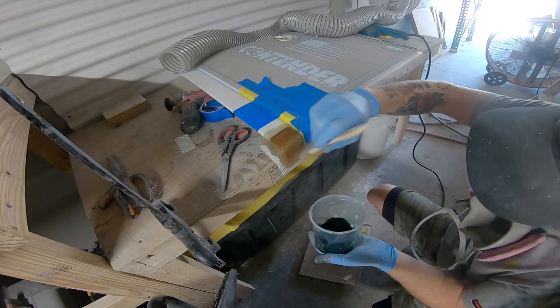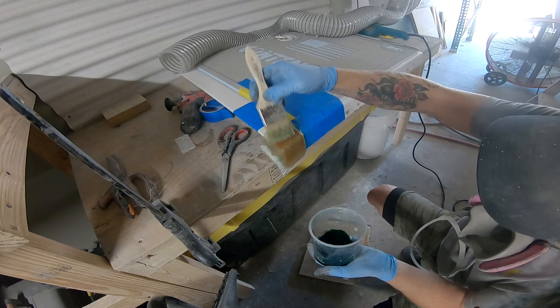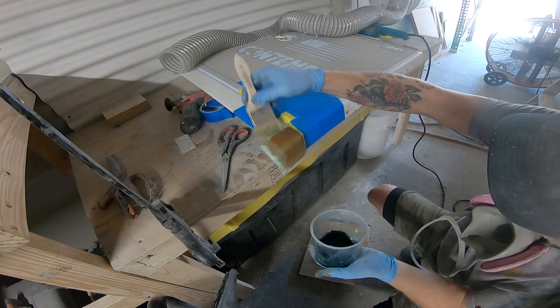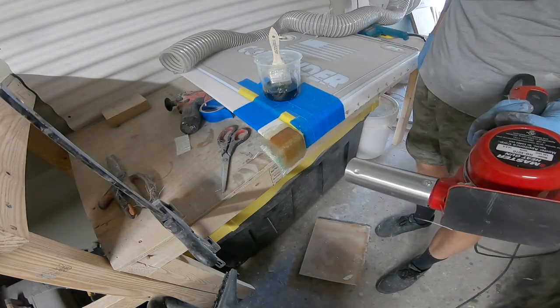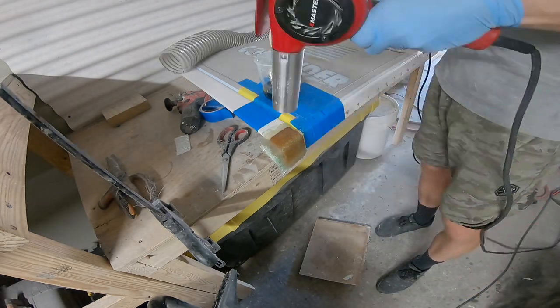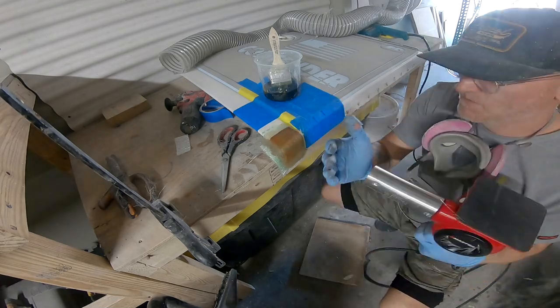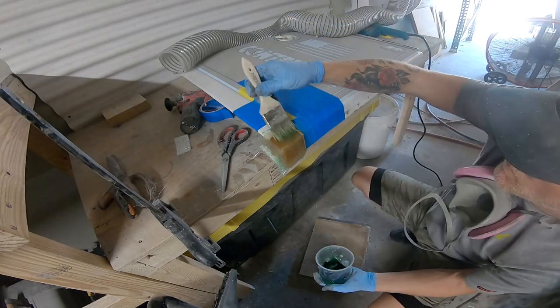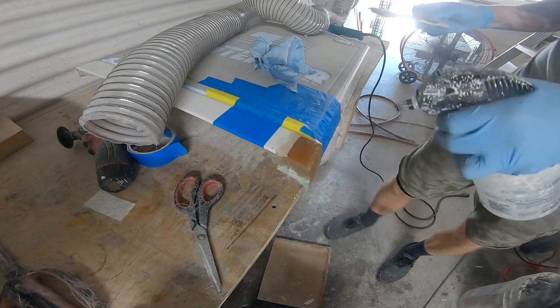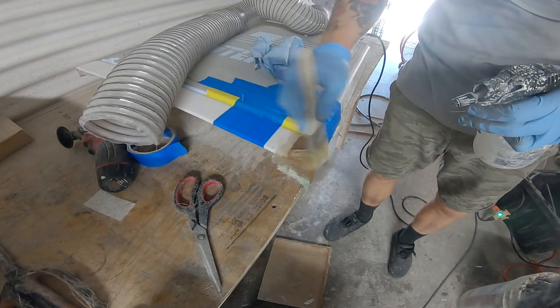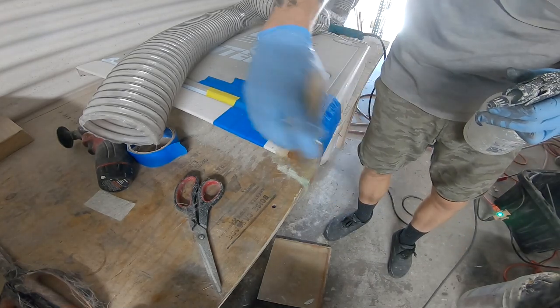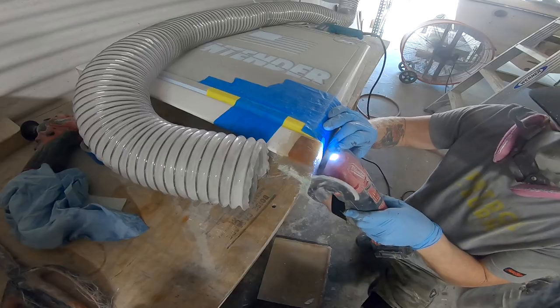All right so once that resin kicked off for about 15 minutes I just brushed on some PVA poly vinyl alcohol and that's going to seal the surface from the air and it's going to make the resin fully cure so that I can sand it and it's not going to gum up my sandpaper. So once that sat for maybe 30-40 minutes the resin was fully cured and I just washed off the PVA with water.